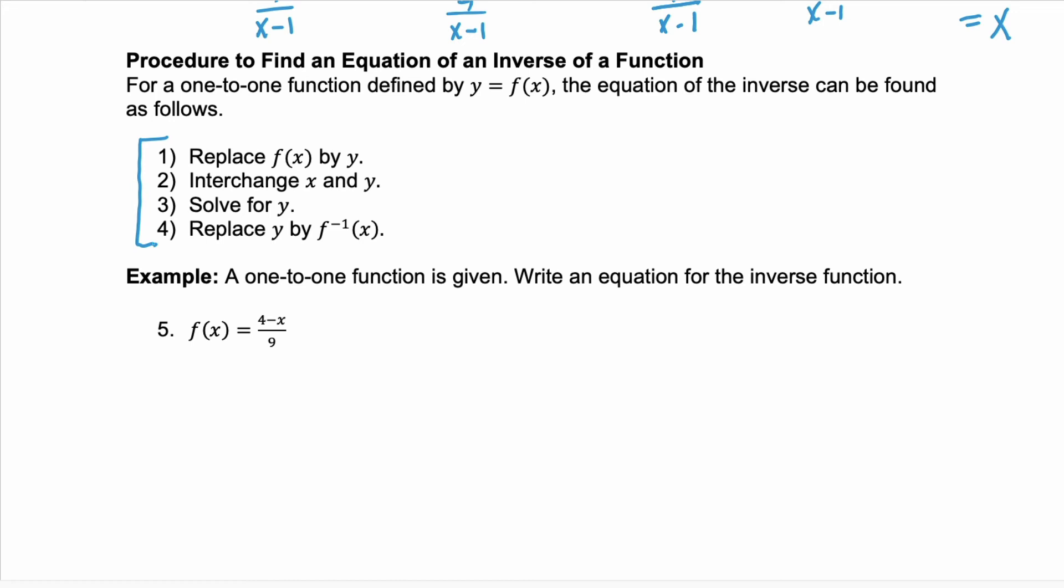In example five, we're given a one-to-one function and we need to find the equation for the inverse. Step one is to replace that function notation f of x or whatever function notation you're given, replace that with y. So you have y equals four minus x over nine.